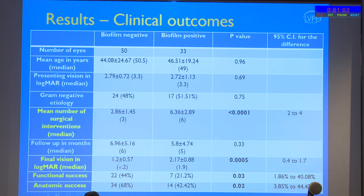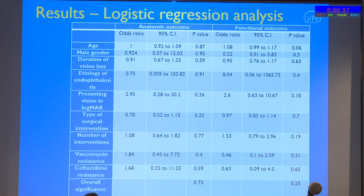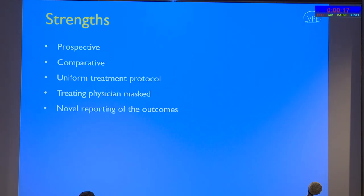In clinical outcomes, a few standout differences were found. The mean number of repeat surgical interventions in the biofilm-negative group was significantly less compared to the biofilm-positive group. Final vision in logMAR was better in the biofilm-negative group. Overall functional and anatomic success was also better in the biofilm-negative group. Logistic regression analysis confirmed that the only differentiating factor was biofilm status, as all other variables were comparable — biofilm-negative yielded lesser intervention, better anatomic outcome, and better functional outcome.